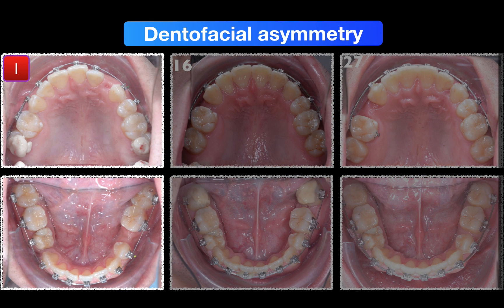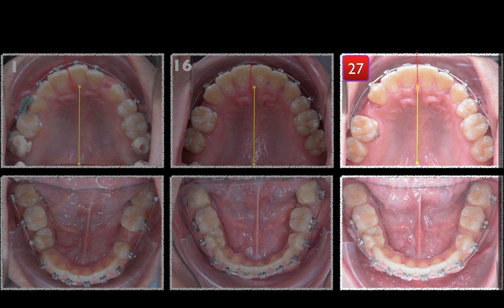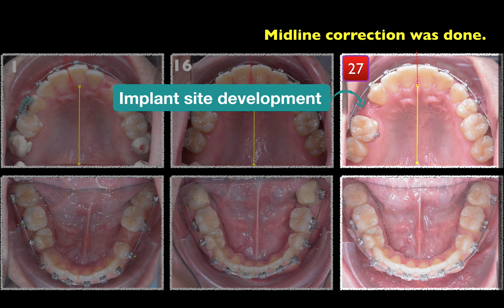Then we talk about dental facial asymmetry. Everybody please focus on the upper dental midline at the mid-palatal length. At the 16th month, the upper left space was closed, but the space for the implant site was not ready. Until the 27th month, midline correction was done, and the space for implant site development — 7.5 mm — was ready.